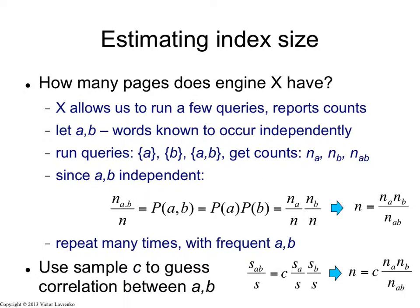So how can I estimate the correlation C? Well, I can estimate it from the sample. So suppose that S of ab is the number of documents in my sample that contain both words a and b. S of a is just the number of pages that contain a. S of b is the number of sample pages that contain the word b. S is the total size of my sample. So in my sample, the following should hold: S of ab over S is C, the correlation coefficient, times S of a over S times S of b over S.